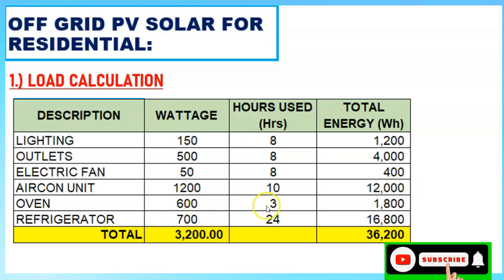For the oven, assume you only use it for 3 hours since you don't cook very often, giving 1,800 watt-hours. For the refrigerator, if you're storing food, you need to run it 24 hours to avoid spoilage, giving 16,800 watt-hours. The total wattage is 3,200 watts and total energy is 36,200 watt-hours.